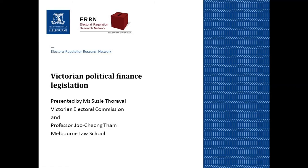From 25 November — the day after the next Victorian state election — the rest of the provisions come into effect. There will be a $4,000 cap on donations in any election period, which is a four-year cycle in Victoria. A registered political party, its endorsed candidates, group-selected members, and its nominated entities will be considered one recipient for the purposes of donations. Members of a group of Legislative Council candidates are also considered one recipient, so donations to one count towards the overall cap.